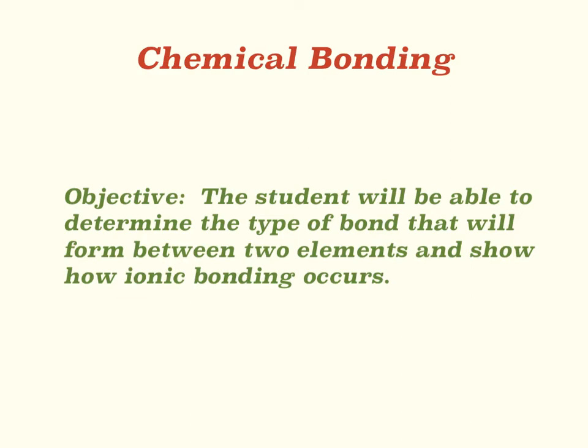Well, hey there. Today we're going to be talking about chemical bonding. That's when two or more atoms join together to make a compound. Today's objective is that you'll be able to tell what type of bond is made between two different elements, and you'll be able to show how ionic bonding occurs.